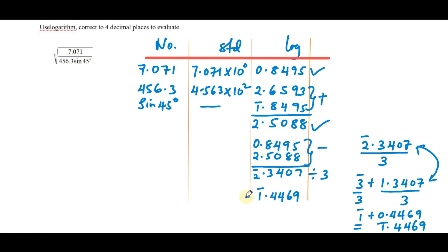One more thing remaining is to get the antilog to get our answer. The antilog of bar 1.4469 is 10 raised to bar 1 times the antilog of 0.4469, which is 2.798. So multiplying these, you get the solution as 0.2798, and that is our answer.